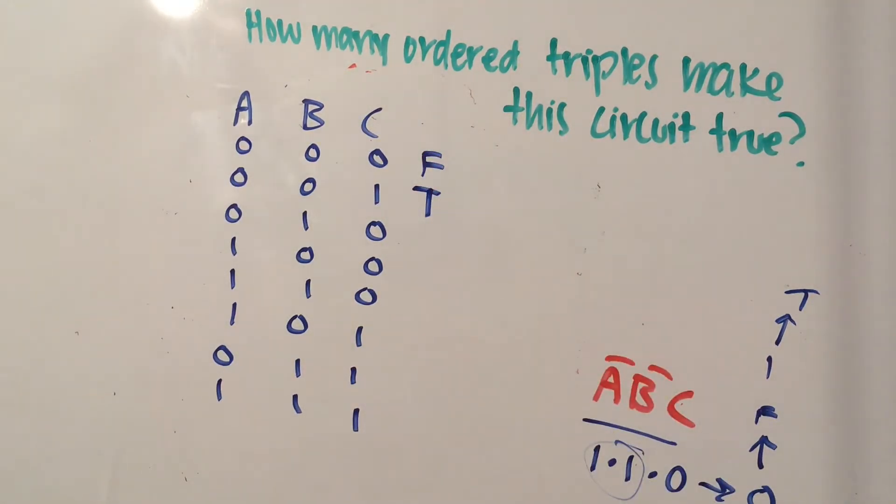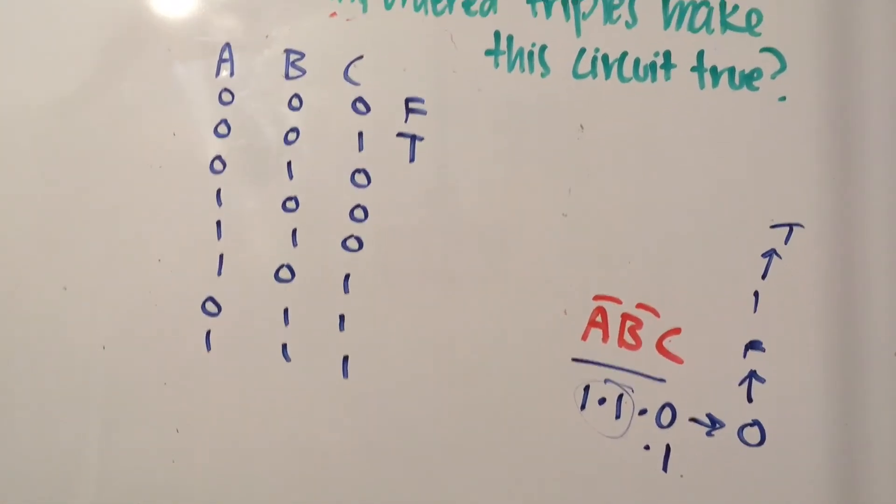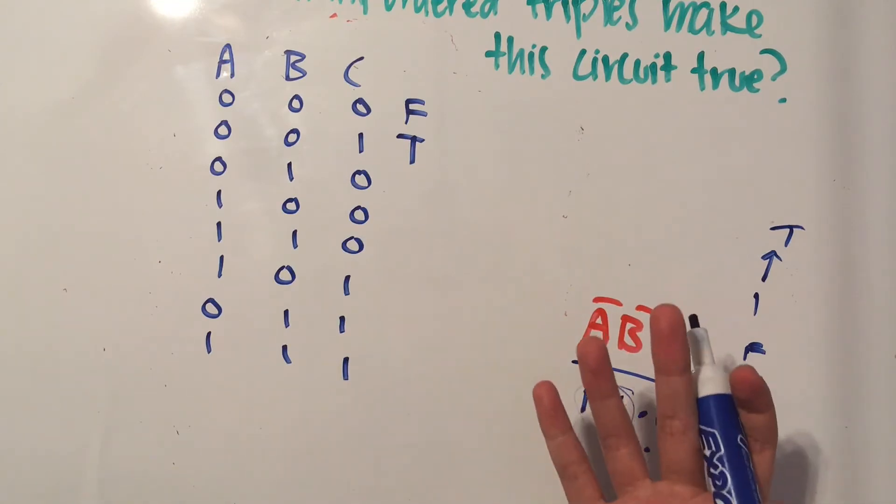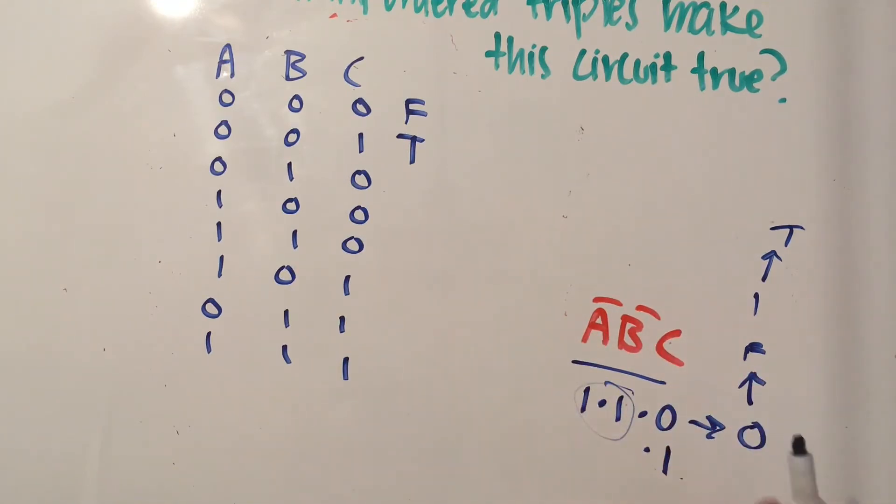So I can already tell now that that is going to be the only ordered pair that will make this circuit true, because if any of these turn out to be zero, then that's going to make the circuit false, because zero times anything will give us zero. And so this should be the only possible combination that makes this circuit true.